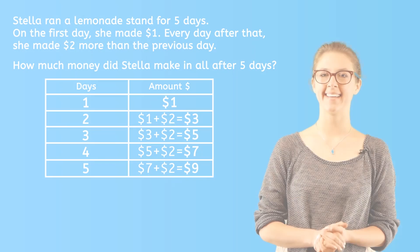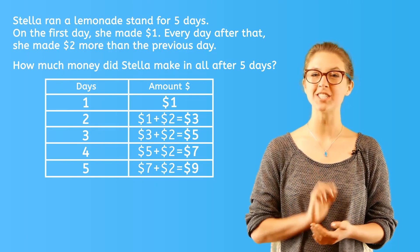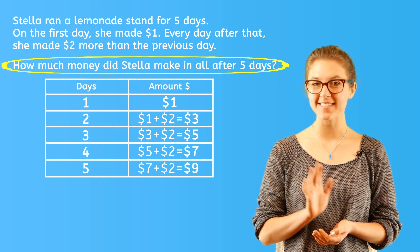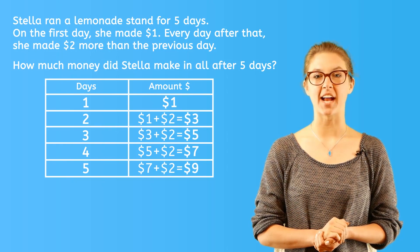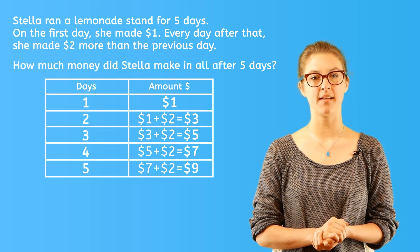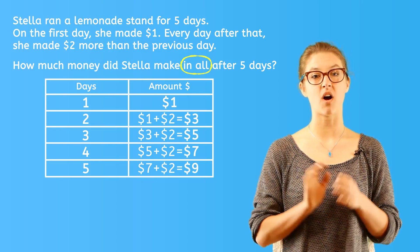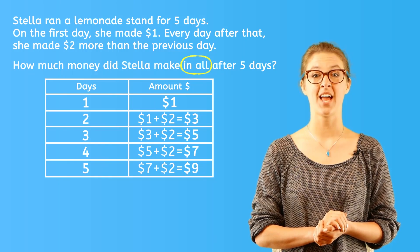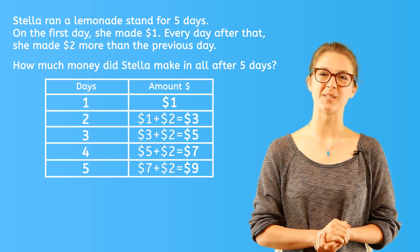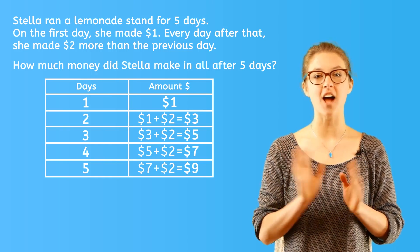Let's see what our final answer is. It's always wise to go back to the original problem. The question asks: how much money did Stella make in all after five days? At first, you might look at the chart and say that on the fifth day, Stella made nine dollars, so our answer is nine. But that is incorrect. If we look at the question again, "in all" means all the days together, not just on day five. So we have one more step to solve this problem. We need to add all of the money that Stella made, because she did make money each day, not just on the fifth.